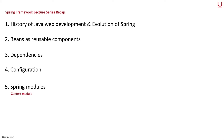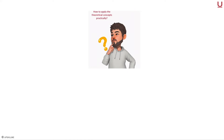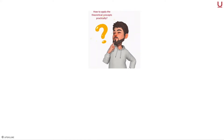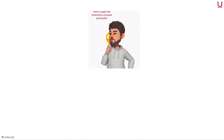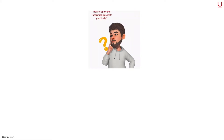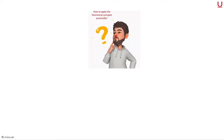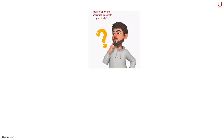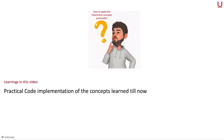We also learned XML and Java configurations to configure Spring applications. All of these concepts are taught in a theoretical setting. We all have some doubts in our mind as to how to apply the theoretical concepts practically. In this video we will take a little detour and work on a simulation of a real world production application. I hope this video will enlighten you on practical aspects of application development. So let us get started.